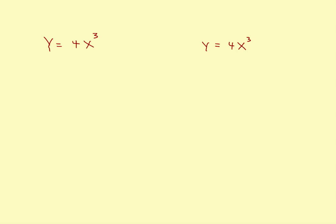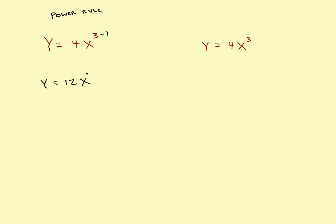This next example will do a couple of things. Students sometimes get confused about whether they need to use the product rule or the power rule. First, let's solve this using the power rule: bring the exponent down in front and reduce it by 1. This becomes 12x squared — that's the answer using the power rule.